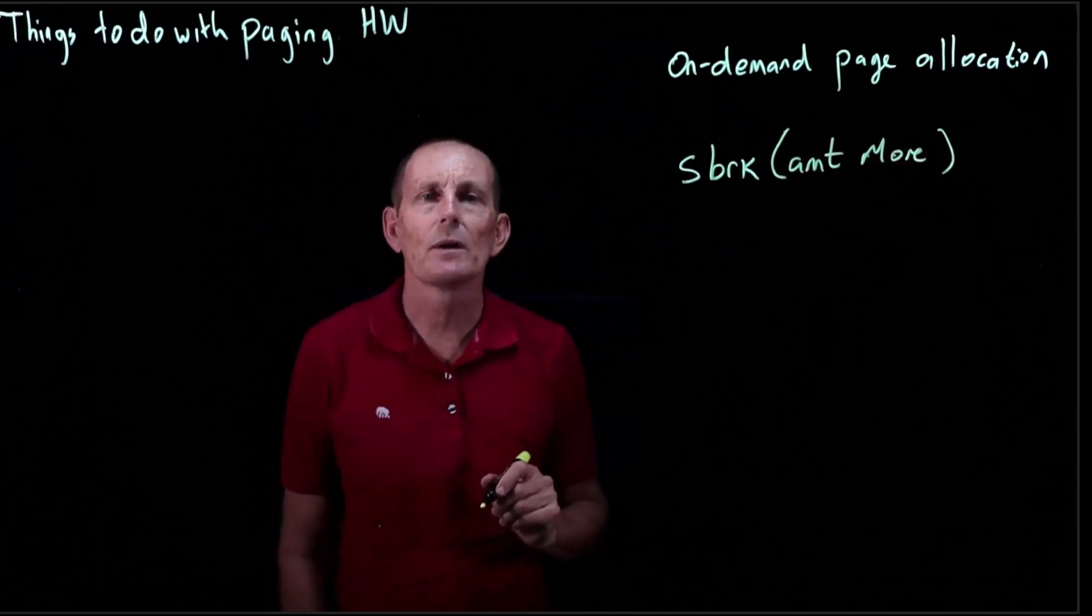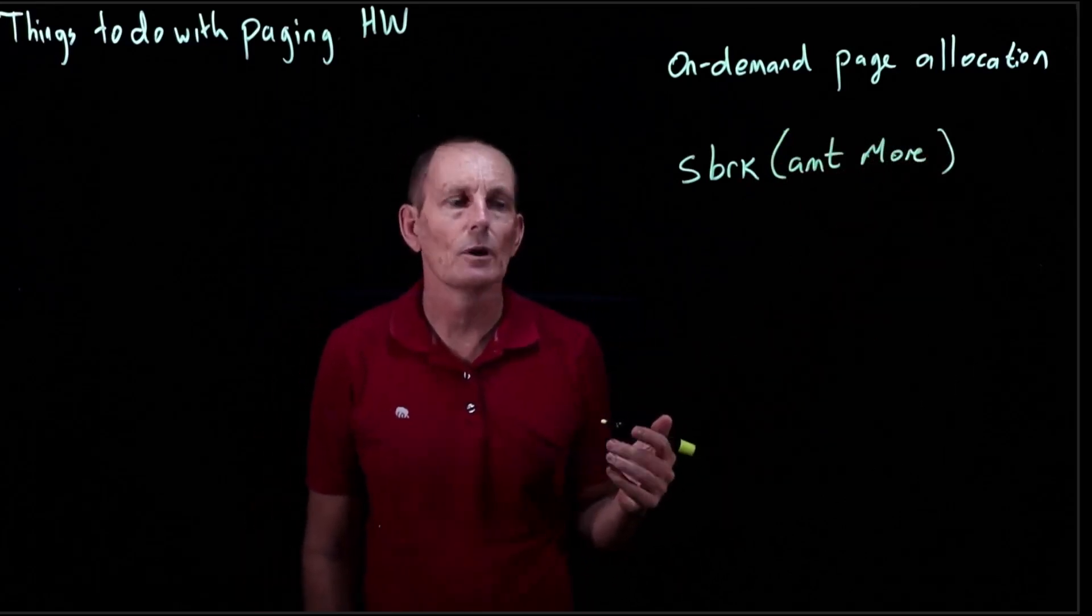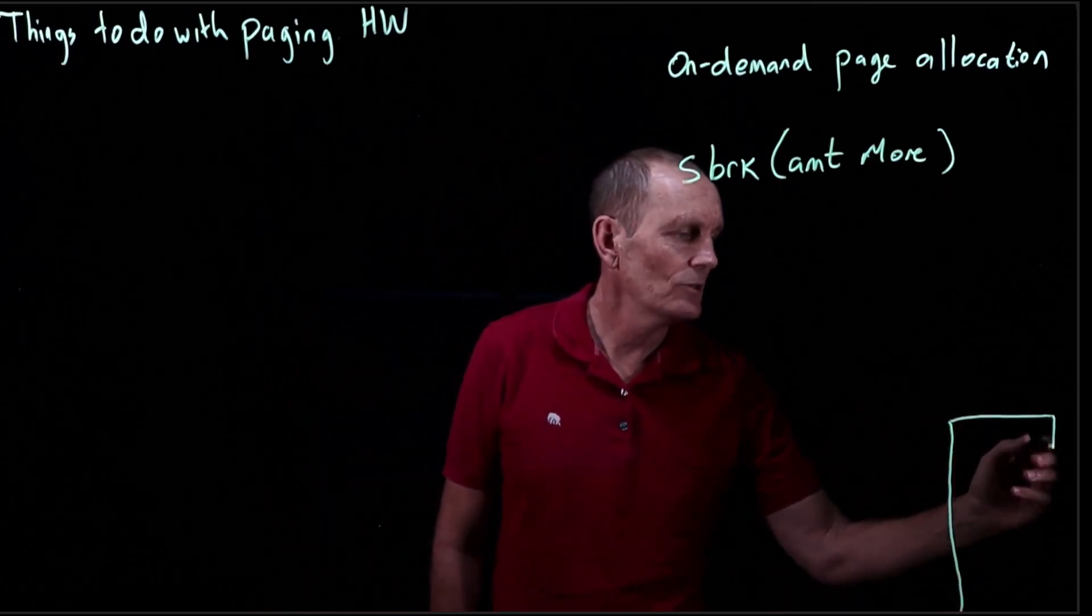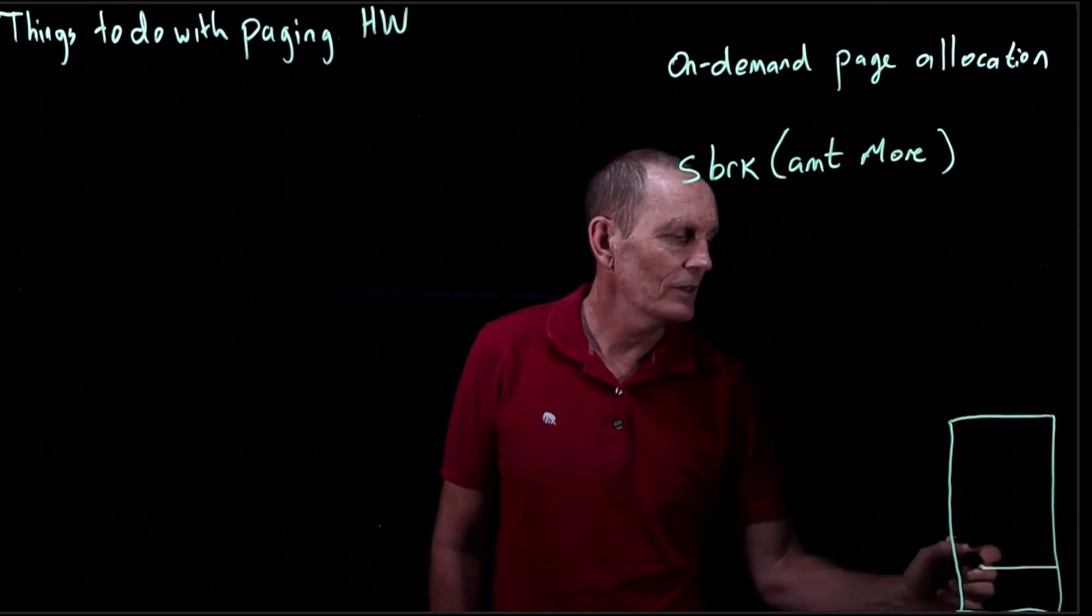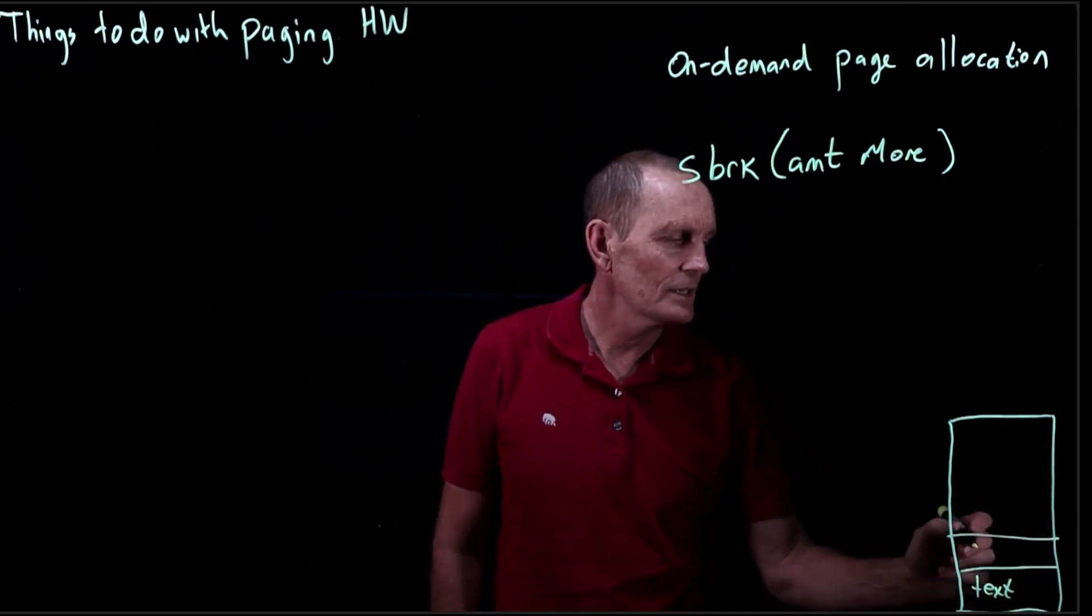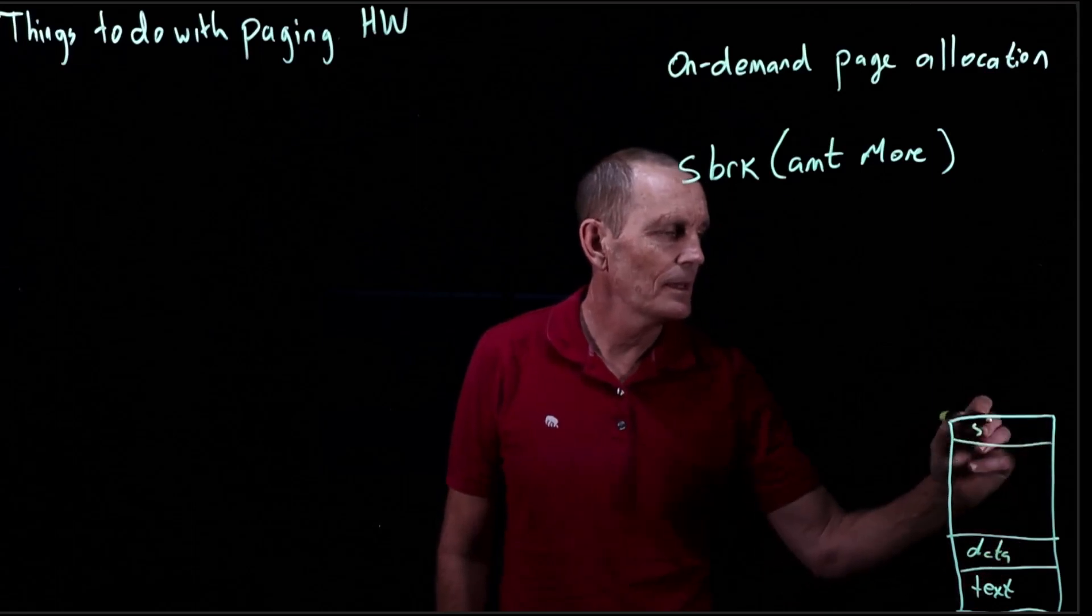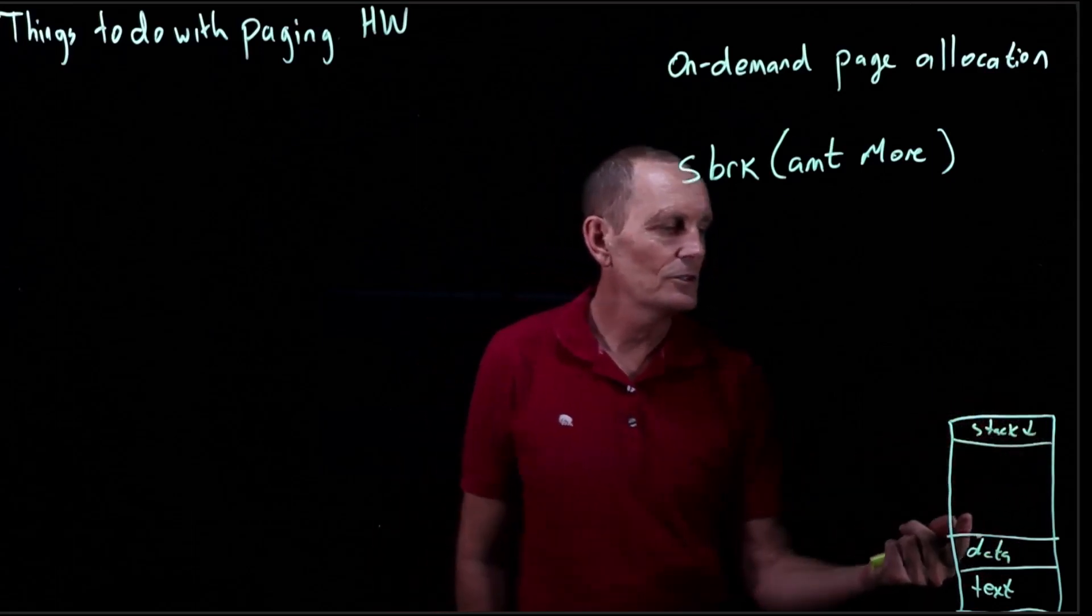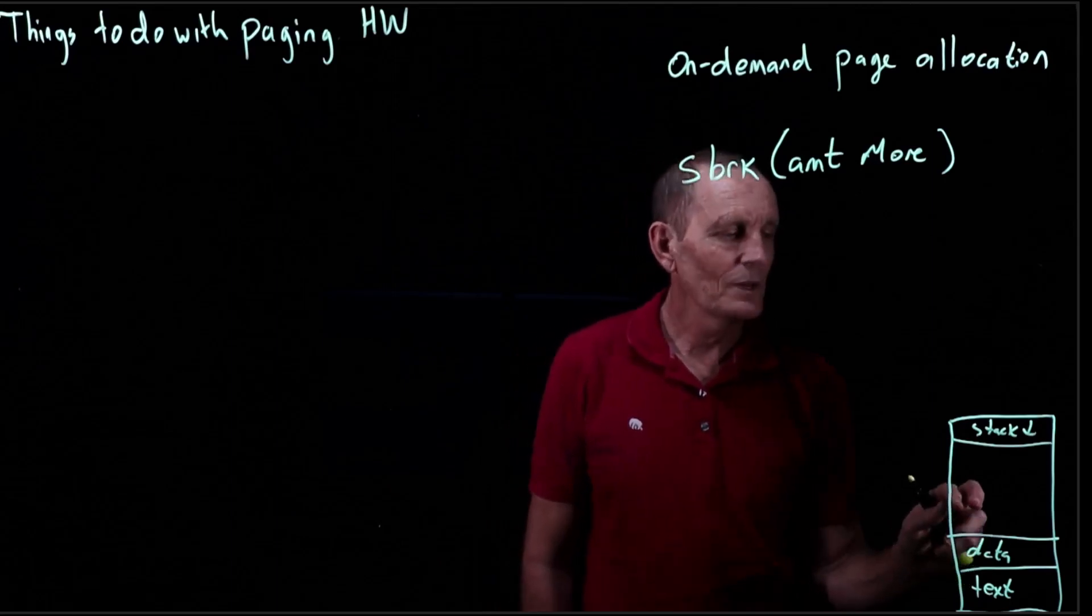So S-break takes a parameter that says how much more memory do I want. So the idea is we've got our process, and we have the text and the stack moving down, and we have this unused area here that we can choose to make bigger.